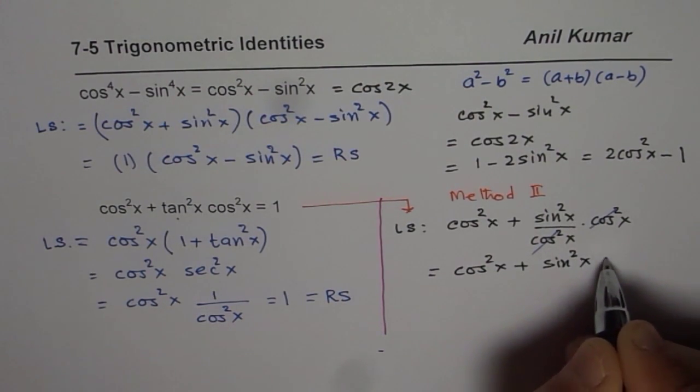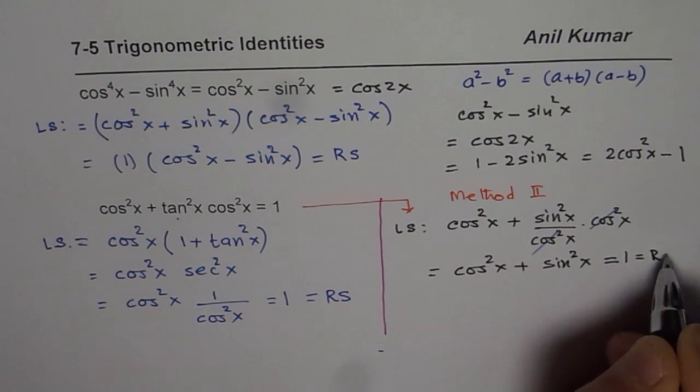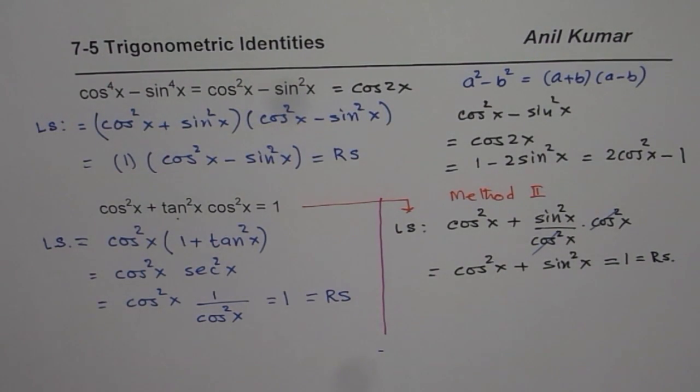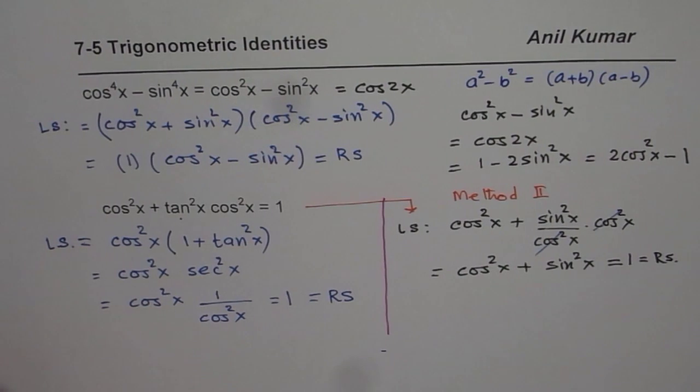And so the left side now becomes cos square x plus sine square x, which you know is one. And that is the right side. So these are Pythagorean identities we have used in this question.